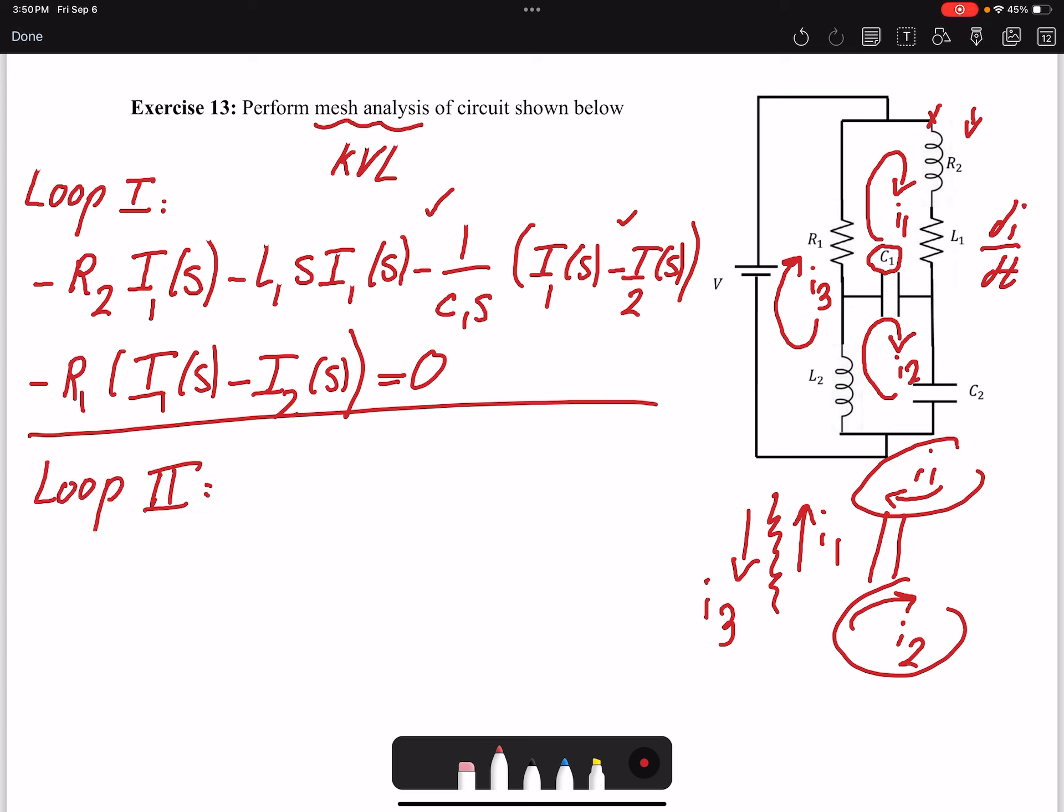Let's start from here. I have C2, which is only affected by I2. In Laplace domain, I have 1/(C2*s)*I2(s). And then I have L2. L2 will be I2 minus I3.